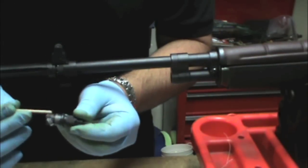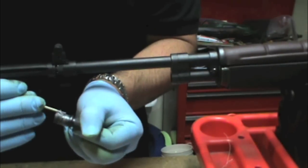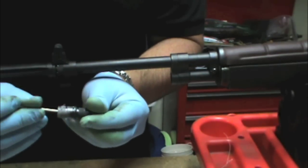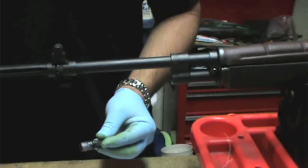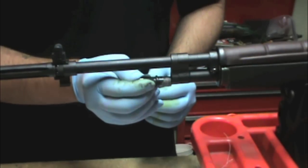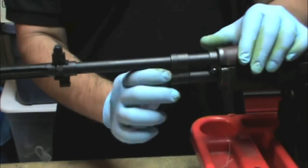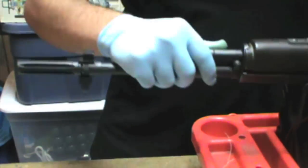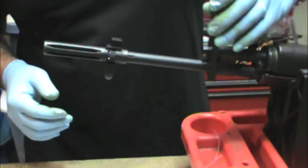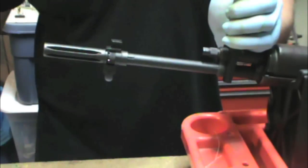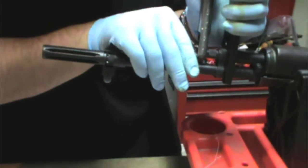Grab some anti-seize lubricant. Put it on your gas plug threads. Go ahead and thread that in there. Grab a gas cylinder wrench. And now, get your 3/8 box-end wrench or your BAD-T1, whatever you choose. And tighten up the gas plug until your reference marks align.